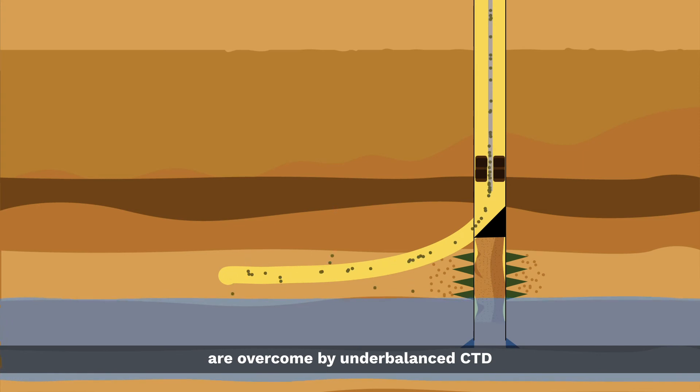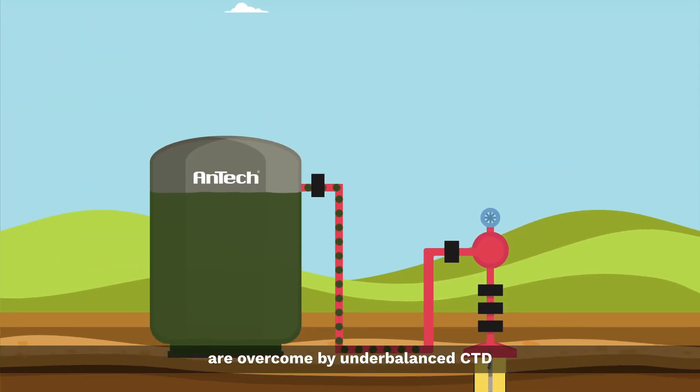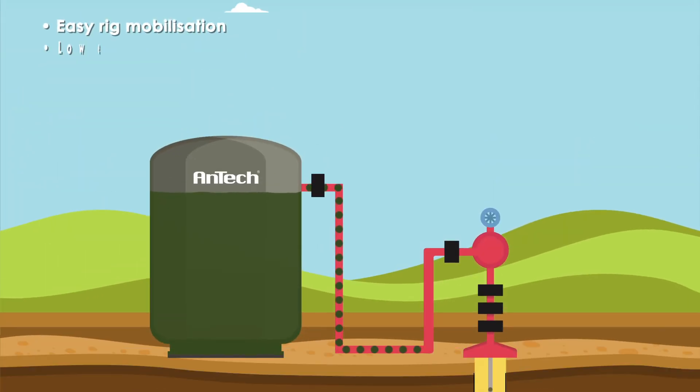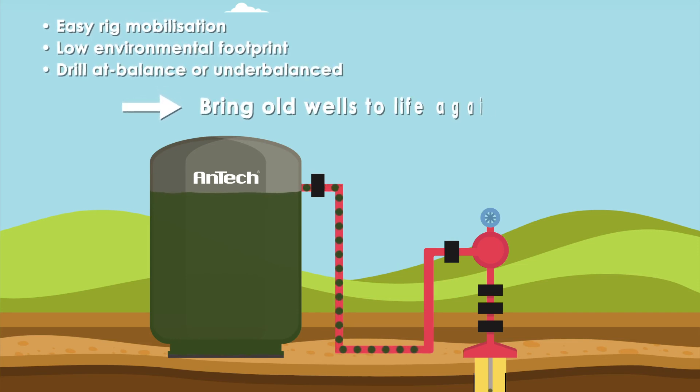That is where underbalanced coiled tubing drilling comes in. Easy rig mobilization, low environmental footprint, and ability to drill at balance or underbalance can bring old wells to life again.